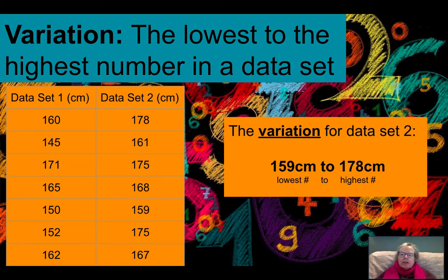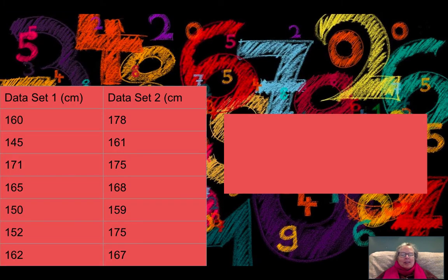it's still the lowest number to the highest number. And that's how you do variation. It's pretty straightforward. So now let's talk about range.